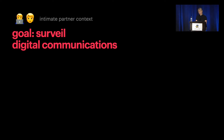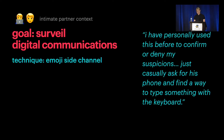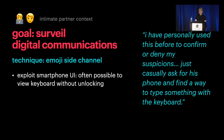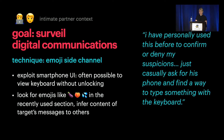Another technique for surveilling digital communications in the intimate partner context is to use emojis as a side channel. As one TikTok creator said: 'I have personally used this before to confirm or deny my suspicions—just casually ask for a phone and find a way to type something on the keyboard.' It's often possible to view a keyboard on a smartphone without unlocking it. The TikToks suggest looking for sexually suggestive emojis like eggplants or peaches to infer whether the target is sexting other people, if the target doesn't usually send those emojis to the instigator.